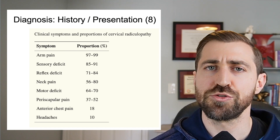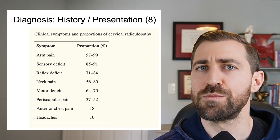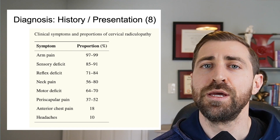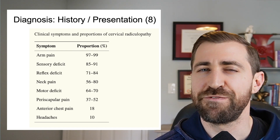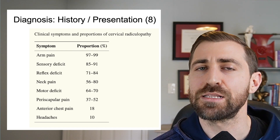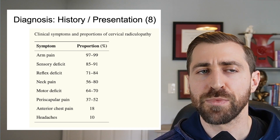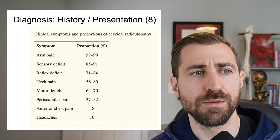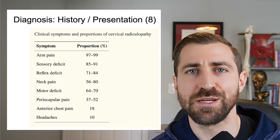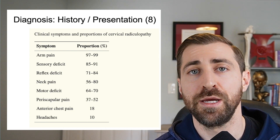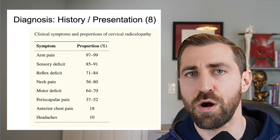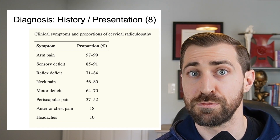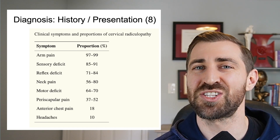Next, let's talk a little bit about history and presentation. When a patient comes through the door, maybe they have cervical radiculopathy. In terms of what these folks tend to present with, the most common symptom is going to be arm pain. That's interesting because when folks have arm pain, your first thought is usually maybe there's a shoulder issue — not necessarily the neck.